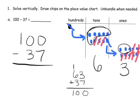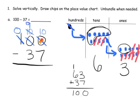Now let's do this using the standard algorithm. We need to take away seven from zero, which we can't do, so we're going to have to unbundle twice. We unbundle a hundred, leaving zero hundreds, which gives us ten tens. Then we unbundle one of the tens, leaving nine tens, and that gives us ten ones. Ten ones minus seven ones gives us three ones. Nine tens take away three tens gives us six tens. No hundreds take away no hundreds leaves nothing, so our answer is sixty-three.